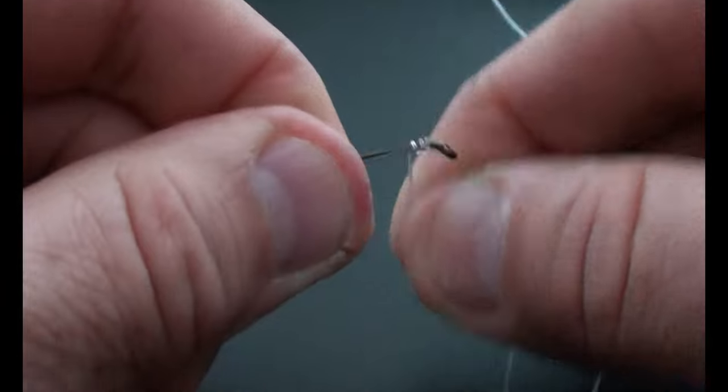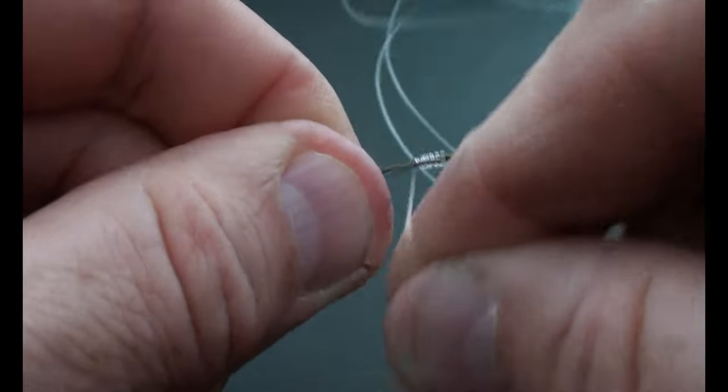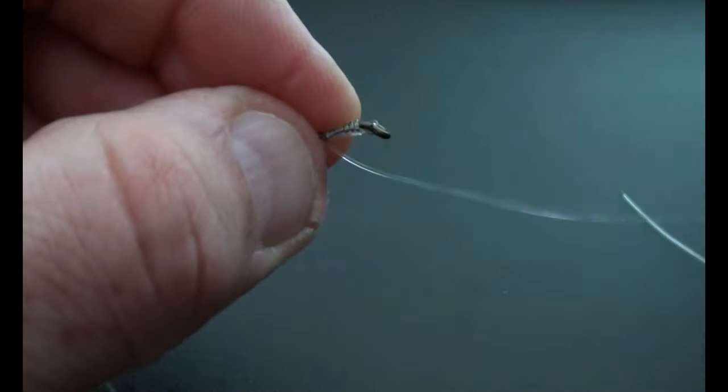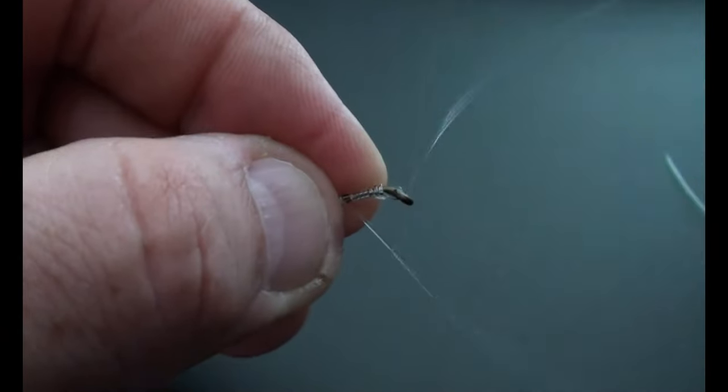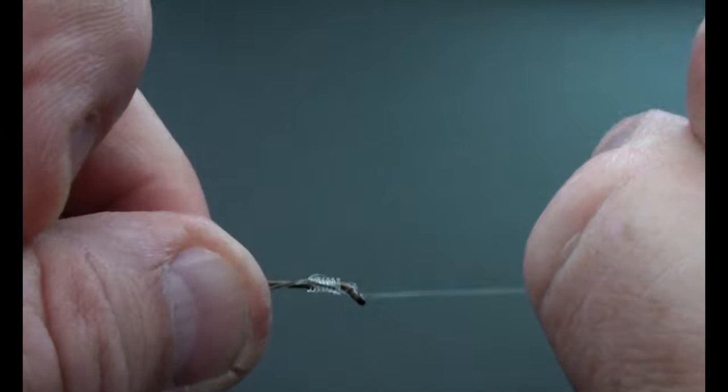You want to make about seven to eight wraps on this. Keep them as tight as you can. Once you get your wraps on there, you're going to pinch the line between your forefinger and thumb, and then take the tag end of that line and pass it through the hook. Cinch that down, and you're ready for the next step.